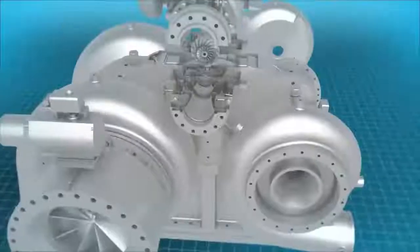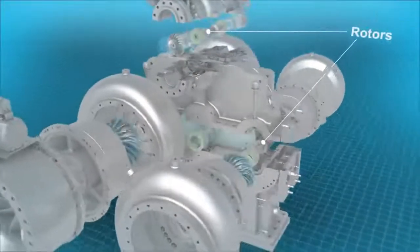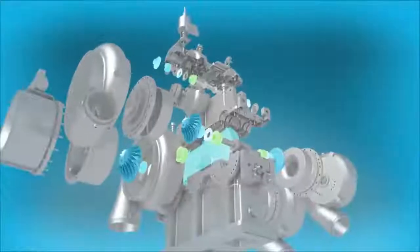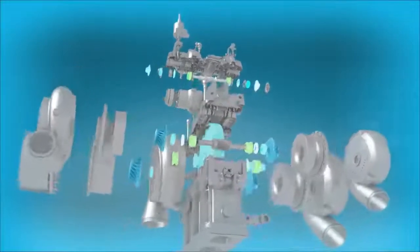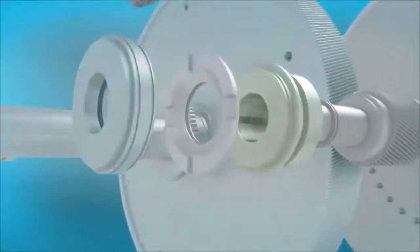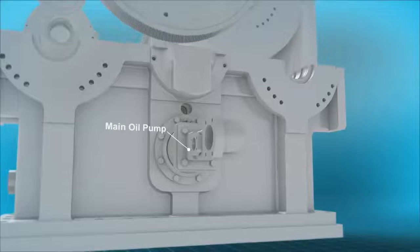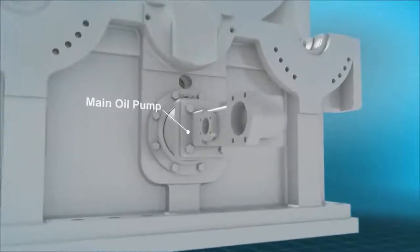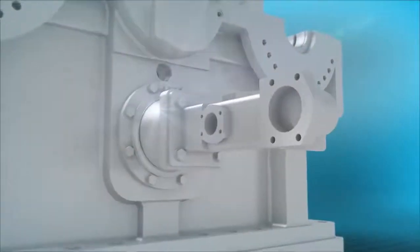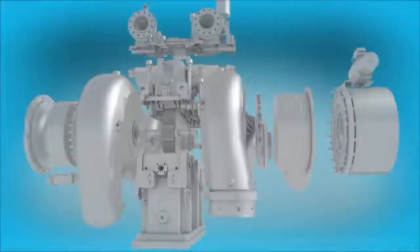Integrally Geared Compressors deliver multiple speed capability by placing rotors on separate pinions. Each compression stage runs at the optimum speed for high efficiency. Compressor bearings and gears are lubricated by the main lube oil pump, which is driven through the bull gear for reliable oil flow.